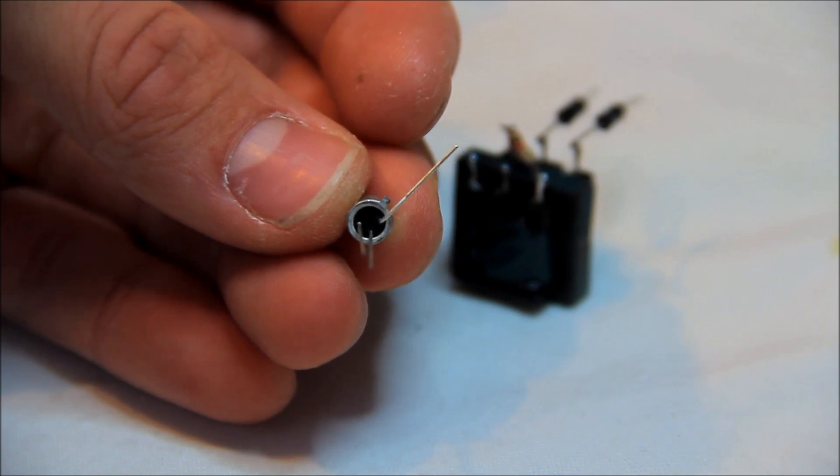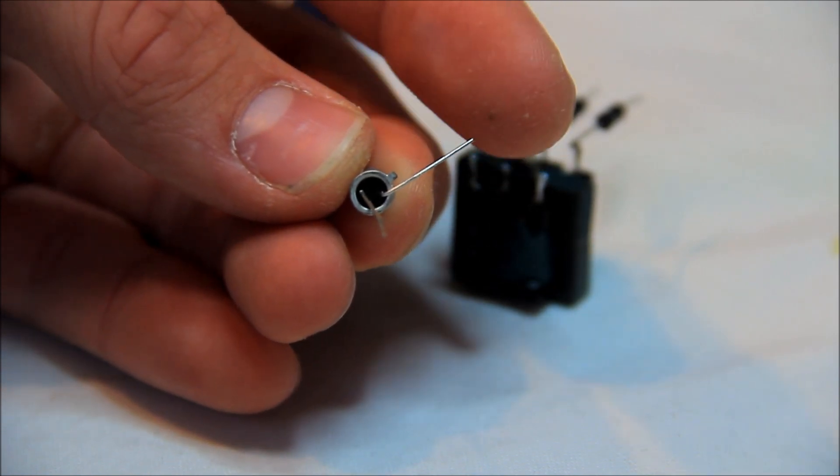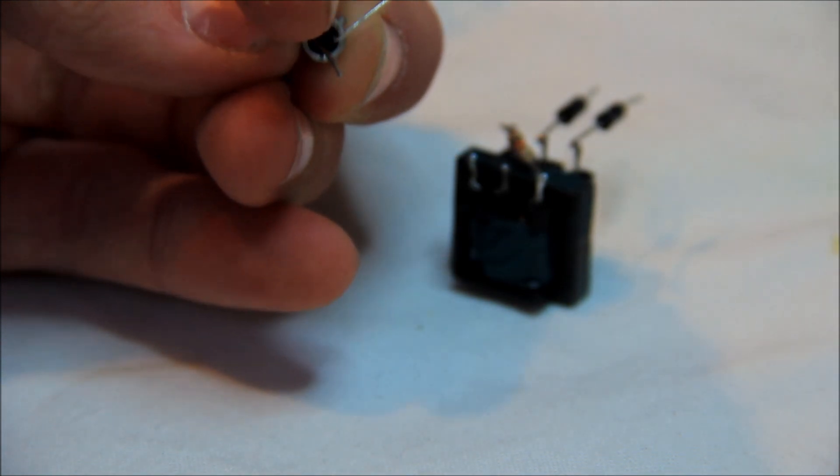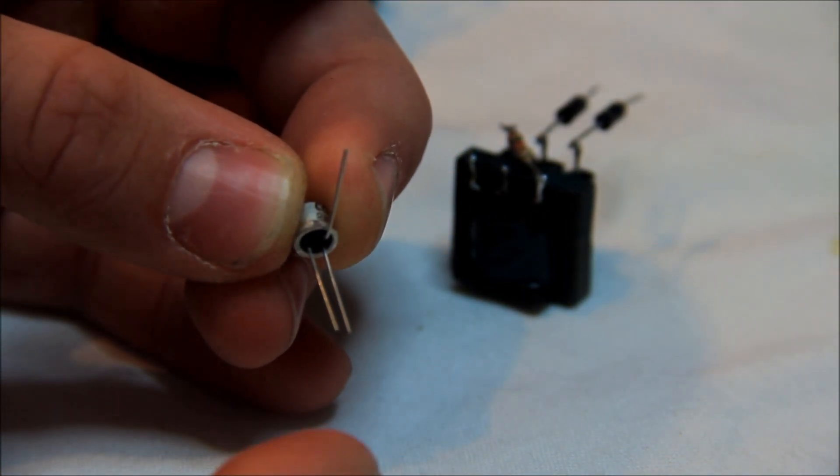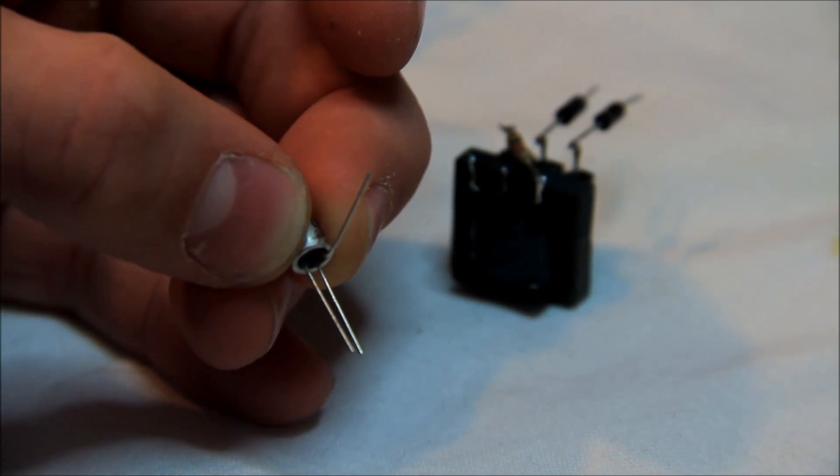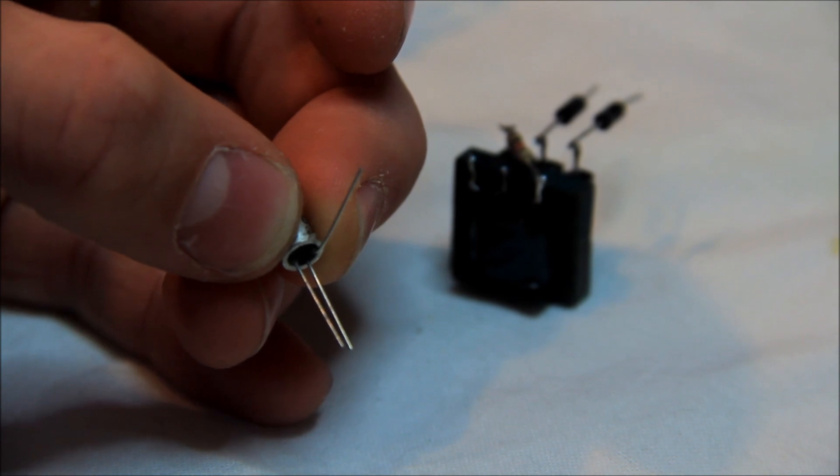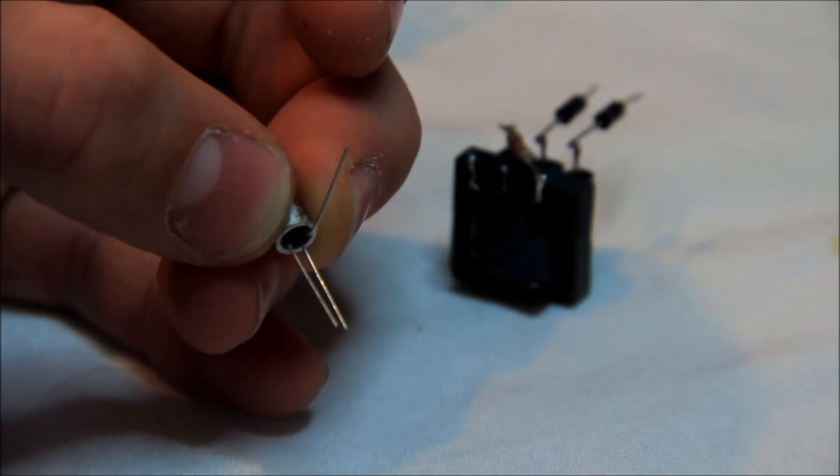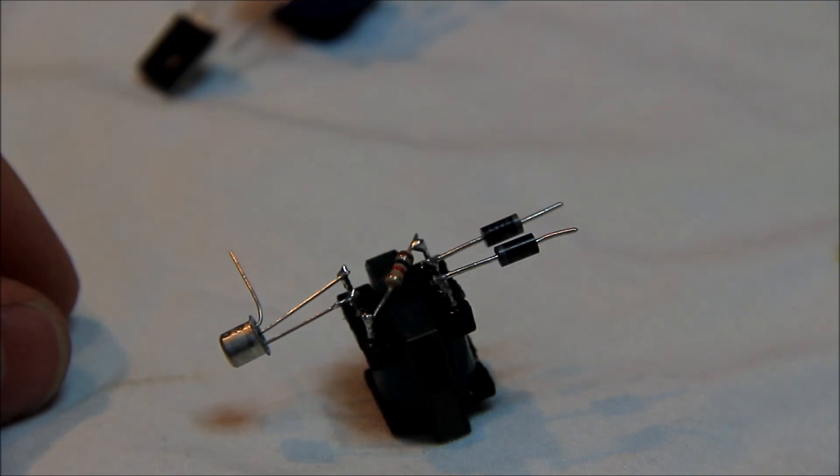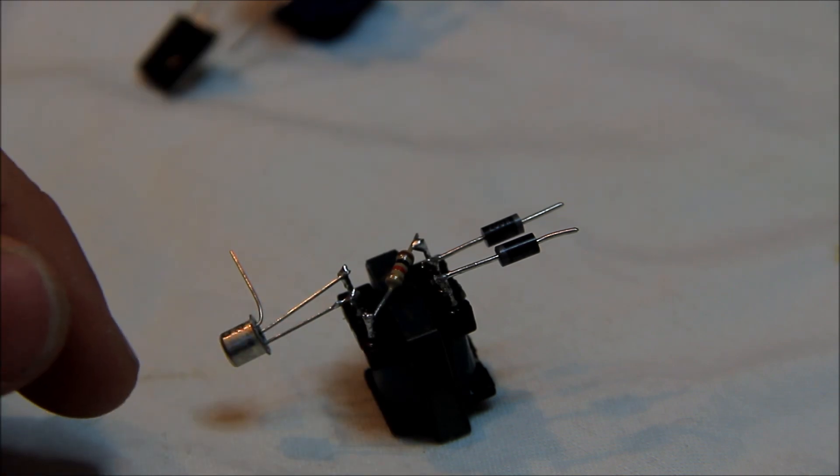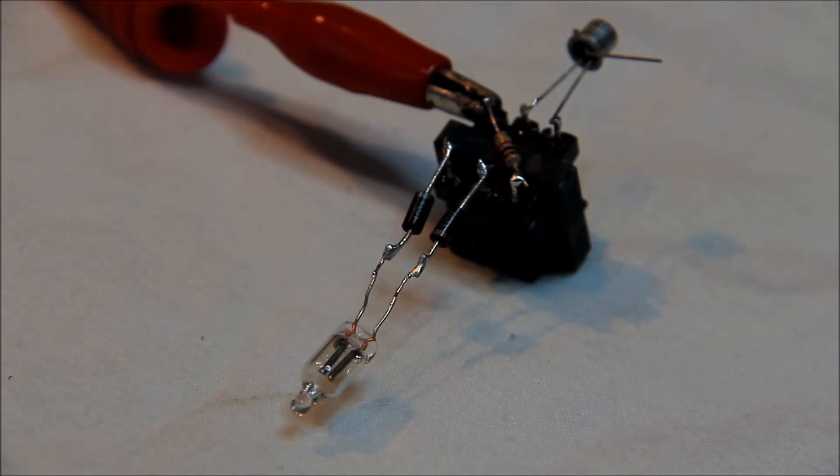Now we need our transistor. One leg of this transistor is the emitter, this is the collector, and this is the base. We only need the base and the collector. The emitter is our negative pole from the battery we use for the jammer. Now we solder our transistor on the pins. On the left pin you have the base and on the right pin you have the collector.